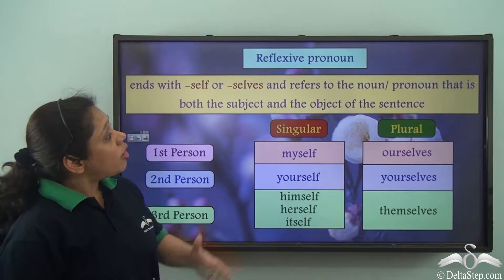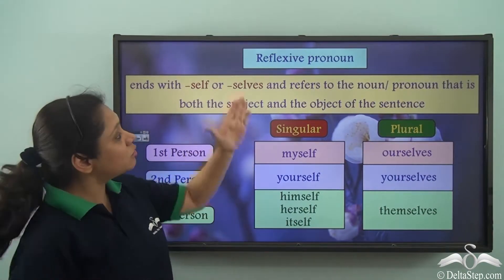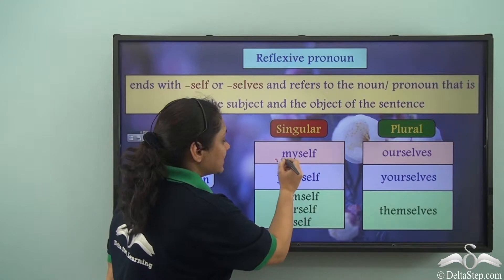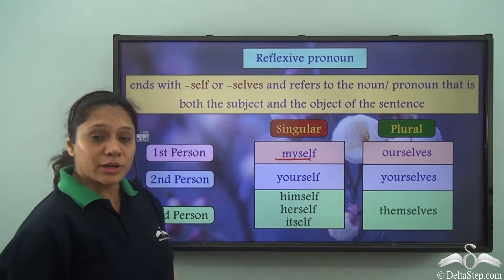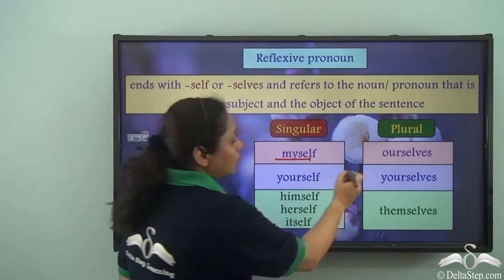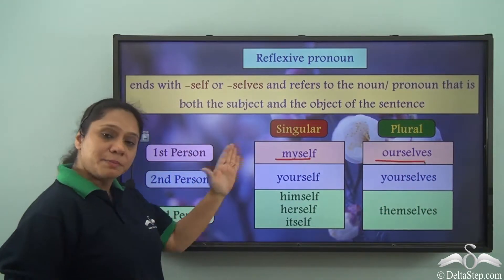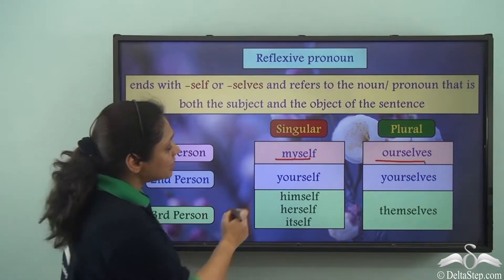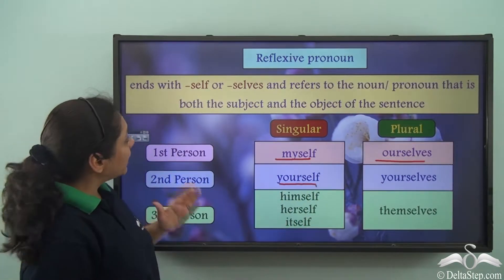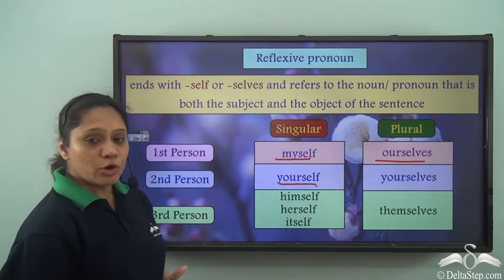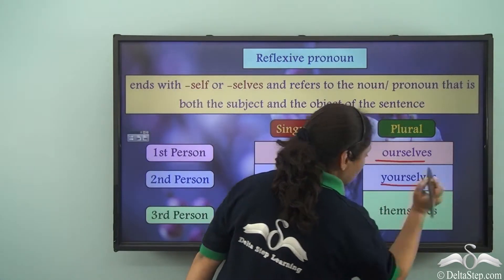For first person singular we use the reflexive pronoun 'myself,' and for first person plural we use 'ourselves.' For second person singular we use the reflexive pronoun 'yourself,' and for second person plural we use 'yourselves.'